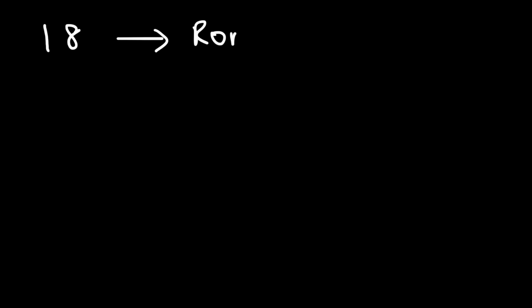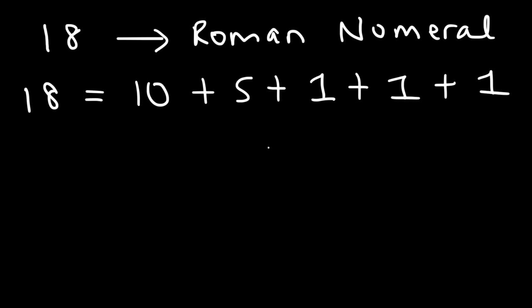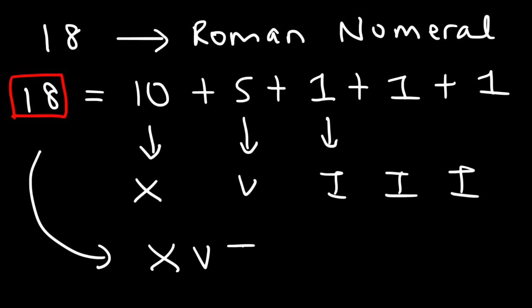Now let's work backwards and convert a number into a Roman numeral. How can we convert 18? Break it down: 18 is 10 plus 5 plus 3, and 3 is 1 plus 1 plus 1. You want to break numbers down into Roman numeral values. So 10 is X, 5 is V, and 1 is I. Therefore 18 is XVIII.